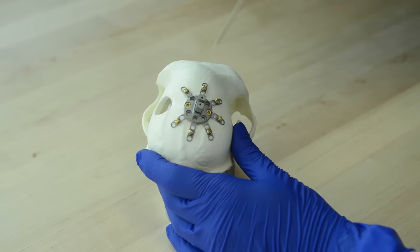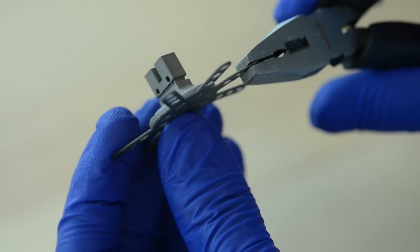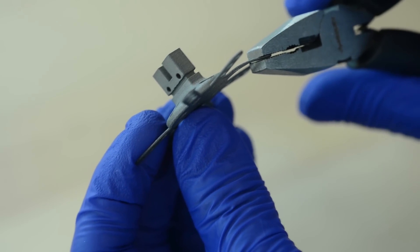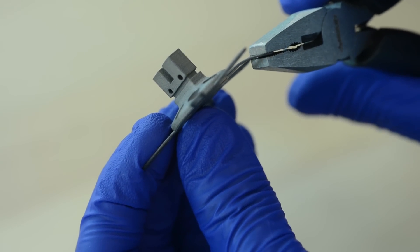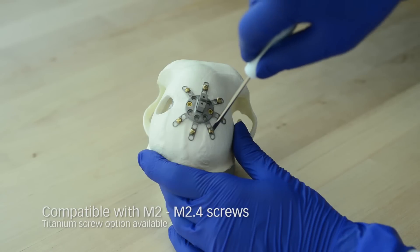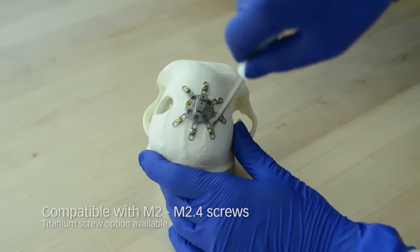After the craniotomy has been performed, attach the primate pedestal to the skull. The pedestal extensions are designed to be bent and cut to conform to the curvature of the skull. If necessary, the pedestal can be securely anchored with upwards of 20 screws.